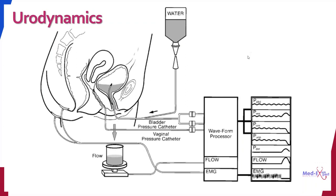Urodynamic testing components include: a double-lumen catheter to fill the bladder and measure intravesical pressure; another catheter inserted into the vagina or rectum to measure intra-abdominal pressure; and the detrusor muscle pressure is calculated by subtracting intra-abdominal pressure from intravesical pressure. There is also an electrode to record electrical activity and a device to collect urine and measure voiding volume and flow rate.